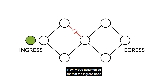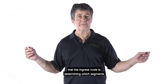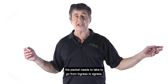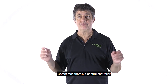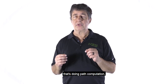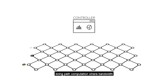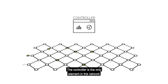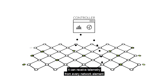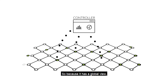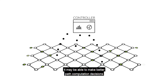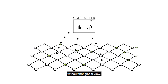We've assumed so far that the ingress node is doing the path computation — determining which segments the packet needs to take to go from ingress to egress. Sometimes that's the case, but not always. Sometimes there's a central controller that's doing path computation. The controller can offer benefits beyond doing path computation where bandwidth reservations are involved. The controller is the only element in the network that maintains a global view of the entire network, and it can receive telemetry from every network element about things like congestion. Because it has a global view, it may be able to make better path computation decisions than any network element could make without that global view.